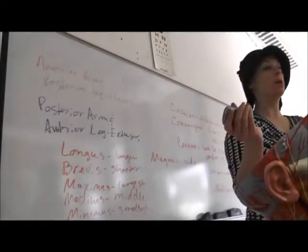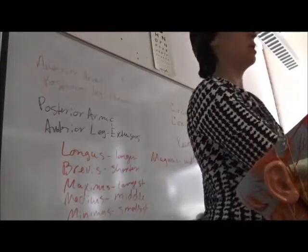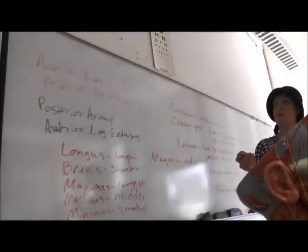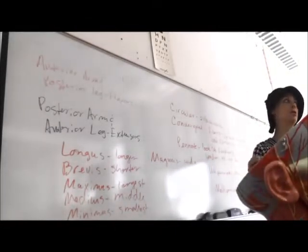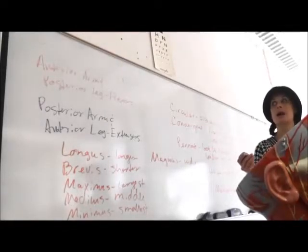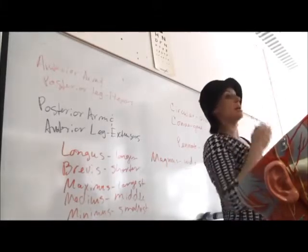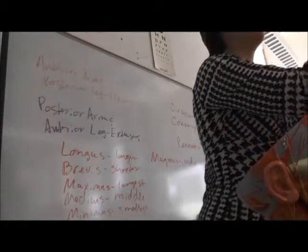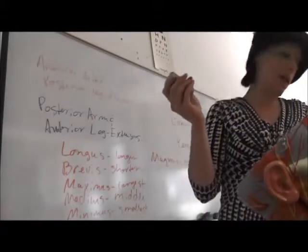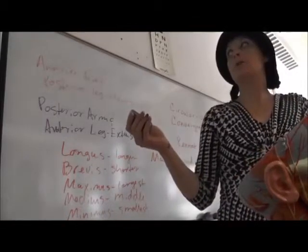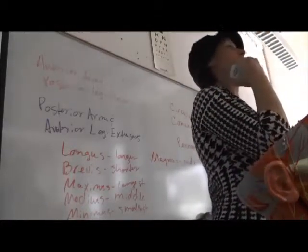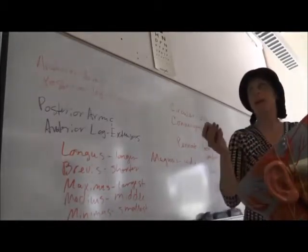We can also name muscles based on number of origins — your biceps brachii has two origins, your triceps brachii has three origins. We can name them based on attachment locations, like the sternocleidomastoid, which attaches to the sternum, clavicle, and mastoid process. And we can name them based on muscle action — rectus femoris and rectus abdominis keep you erect, and adductor longus and adductor magnus are adductor muscles.